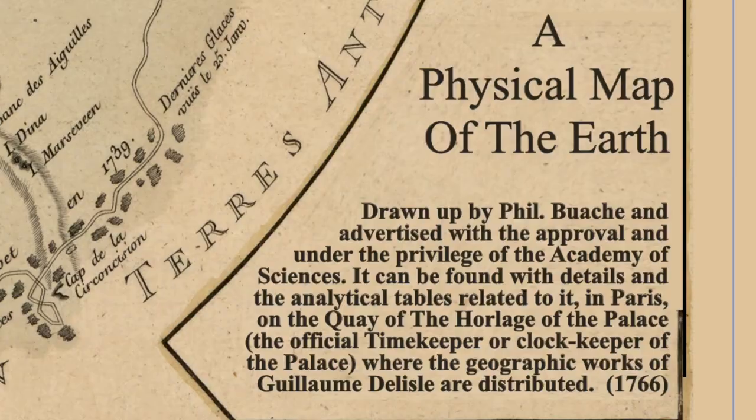The physical map of the Earth, drawn up by Philippe Boische and advertised with the approval and under the privilege of the Academy of Sciences. It can be found with its details and the analytical tables relating to it in Paris on the key of the Orlage of the Palace, official clockkeeper or timekeeper of the Palace, where the geographic works of Guillaume de Lille are distributed. 1766.